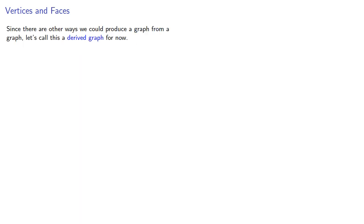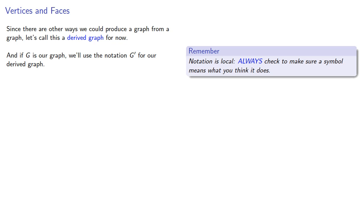Since there are other ways we could produce a graph from a graph, let's call this a derived graph for now. And if G is our graph, we'll use the notation G' for our derived graph. And it's very important to remember, notation is local. Always check to make sure a symbol means what you think it does. So we'll produce this derived graph as follows: for every face in G, create a vertex V' in G', and if two faces are adjacent, place an edge between their corresponding vertices.